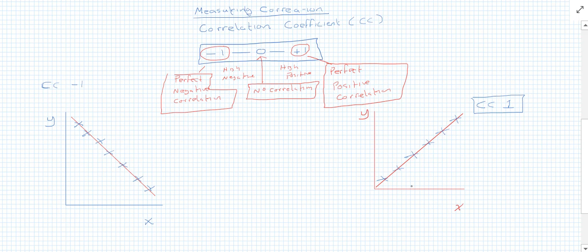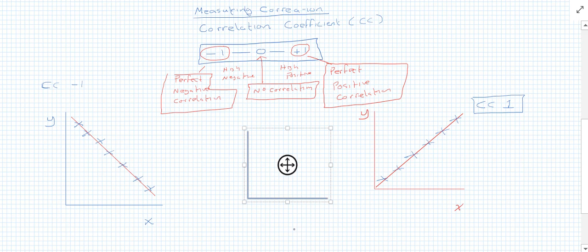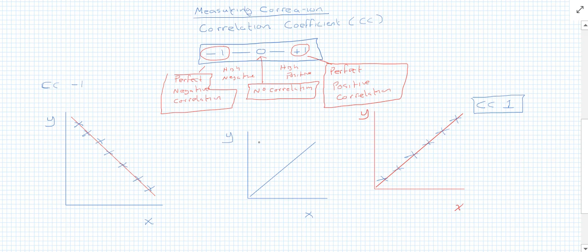Then in the middle: if we draw a graph with an x and y axis, we can draw a line through it, but there's no correlation — the values are all over the place, not following any particular pattern. This is an example where you would have a correlation coefficient of zero.